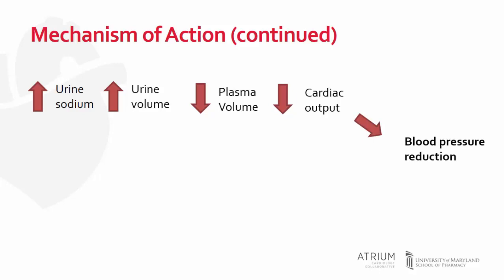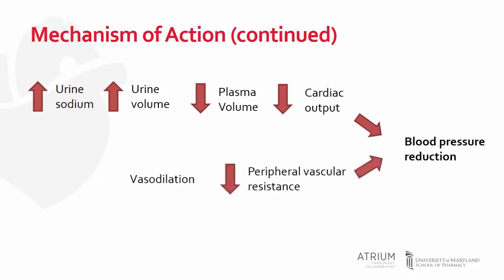Interestingly, the diuretic response seen with thiazide diuretics causes only an acute or transient blood pressure lowering effect. Plasma volume returns to near normal levels shortly after initiation of therapy, but vasodilation is an important mechanism in the long-term blood pressure lowering effects that we see with thiazide diuretics. The mechanism whereby this occurs is largely unknown, but we do know it plays a significant role.